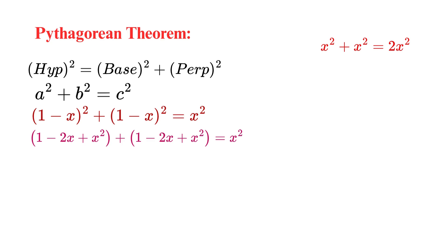Next, let's look at the x terms. We have minus 2x and another minus 2x. So, that's negative 2x plus negative 2x, which equals negative 4x. And finally, the constant terms, the numbers without any x. We have 1 plus 1, which equals 2. So, when we put it all together, our equation becomes 2x² - 4x + 2 = x².